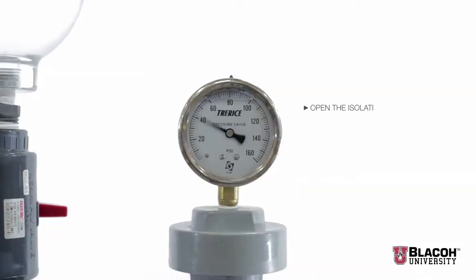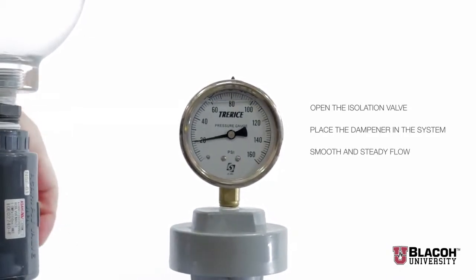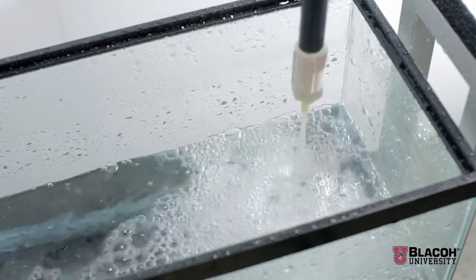As we open the isolation valve and place the dampener in the system, we see a smooth flow. We can see the gauge is now at 20 psi.